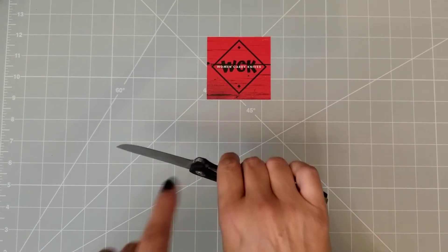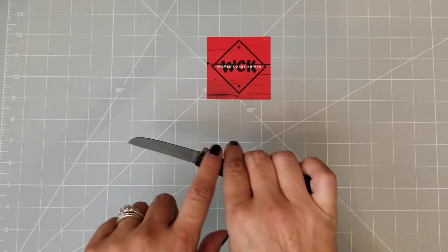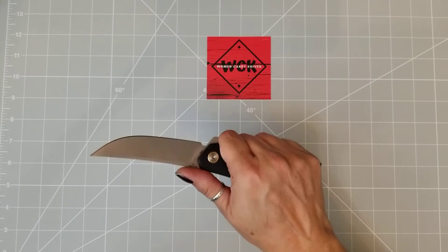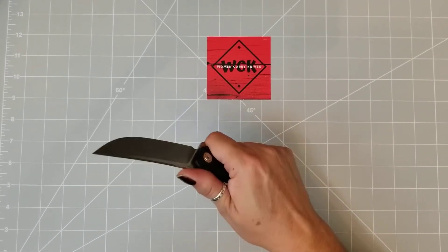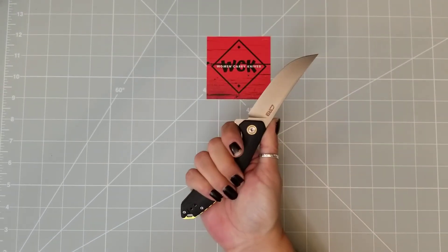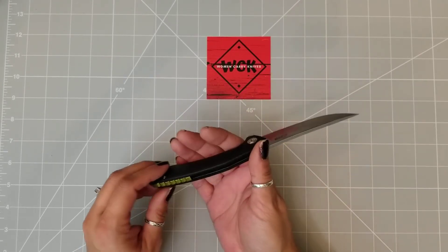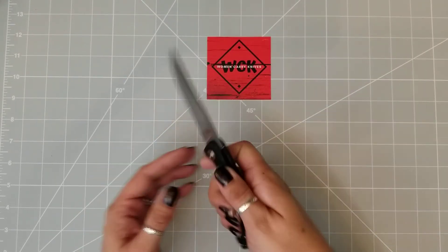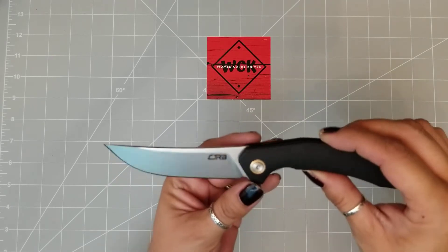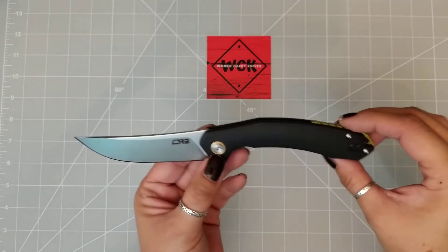You can really get up there. You have jimping kind of on the bottom of your flipper here, so when you are choking up on it, your finger is not going to go anywhere. It feels really good. It's just a pretty looking blade. I mean, you can't go wrong with this. Is that not just absolutely gorgeous? Look at that.